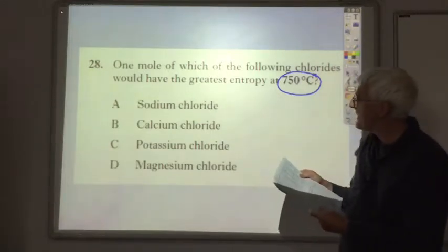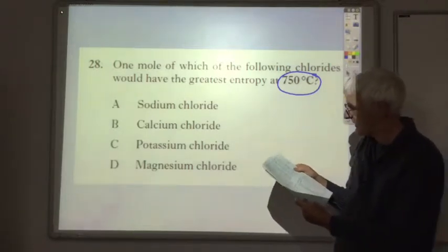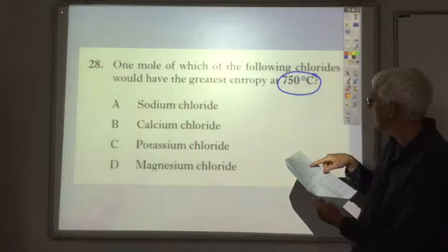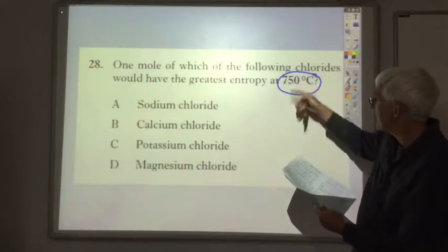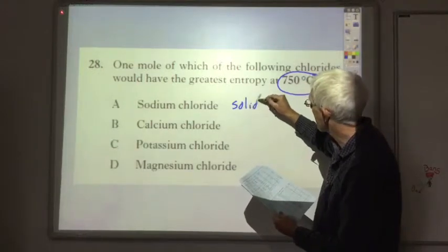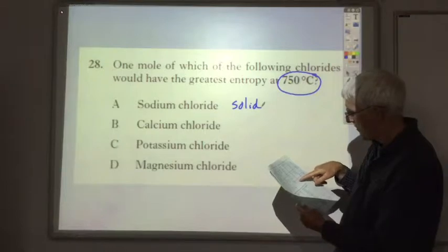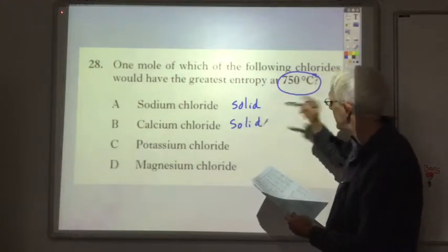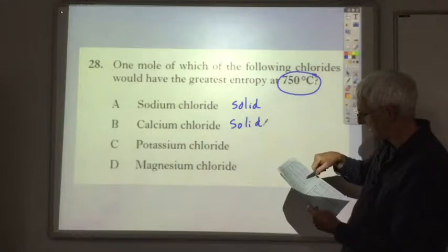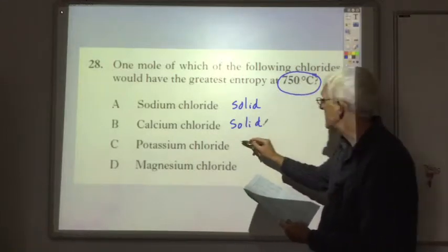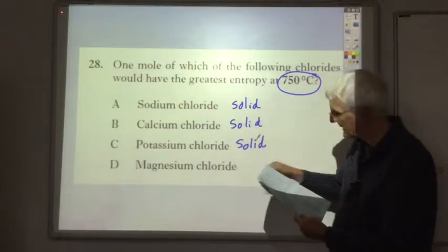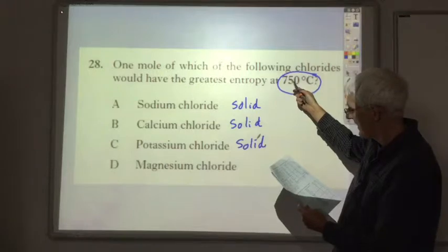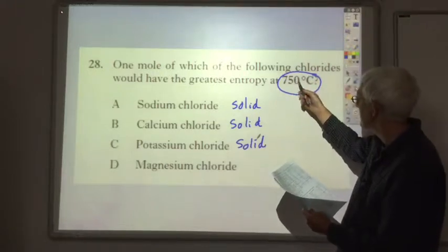Okay, so if you look up the melting and boiling point of sodium chloride on page nine of your data booklet, you'll find that sodium chloride melts at 101 degrees C, so it's still going to be solid at 750. Calcium chloride melts at 775, so it will still be solid at 750. Potassium chloride melts at 770, so it's still a solid. And magnesium chloride melts at 714, so at 750 it will have turned into a liquid, it doesn't boil to 1400, so it will be a liquid.